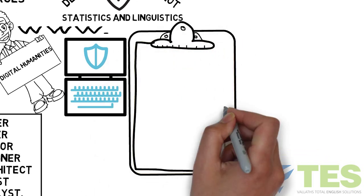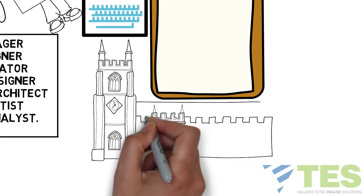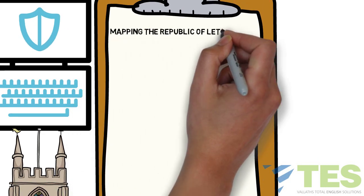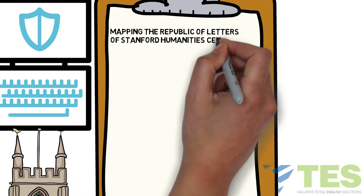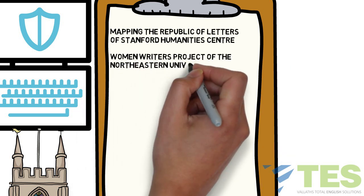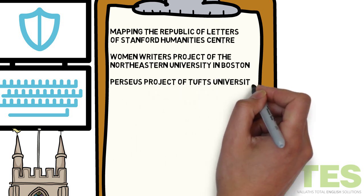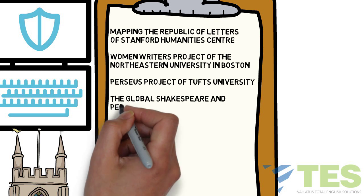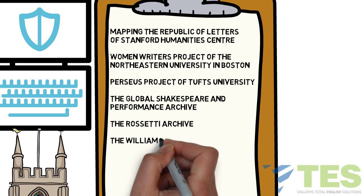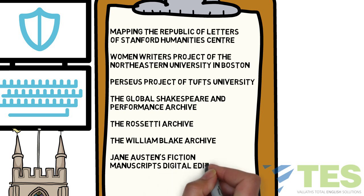Some of the significant digital humanities projects taken up by western universities include: Mapping the Republic of Letters of Stanford Humanities Center, the Women Writers Project of Northeastern University in Boston, the Perseus Project of Tufts University, the Global Shakespeare and Performance Archive, the Rossetti Archive, the William Blake Archive, and Jane Austen's Fiction Manuscripts Digital Edition.